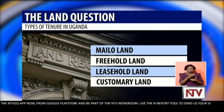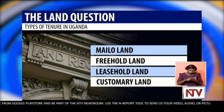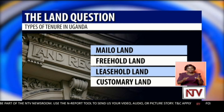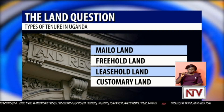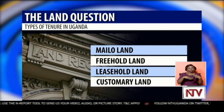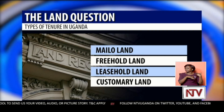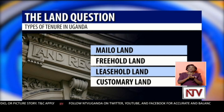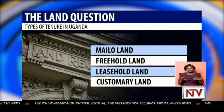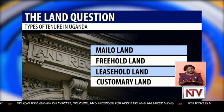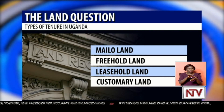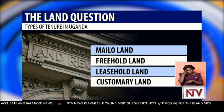The second is the Mailo land, which was established after the 1900 Buganda Agreement — you might remember that from your days back in primary school. It is mostly crown land that functions on a tenancy system. Majority of it was given to the collaborators of the British colonial government on the eve of Uganda becoming a protectorate.